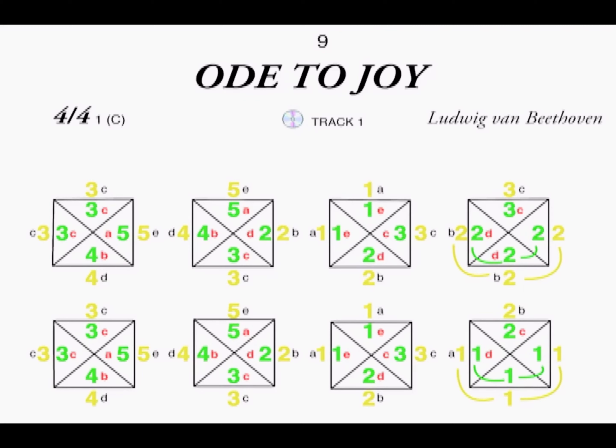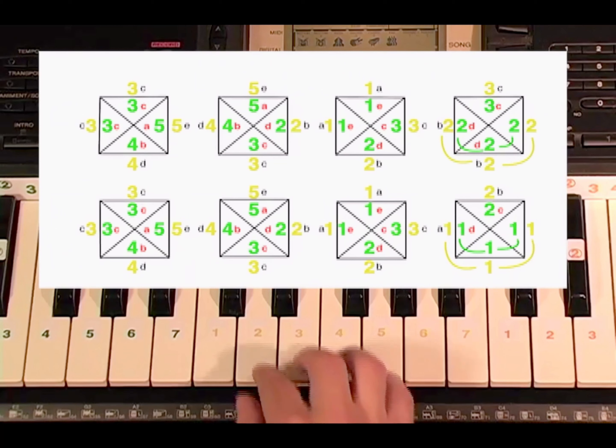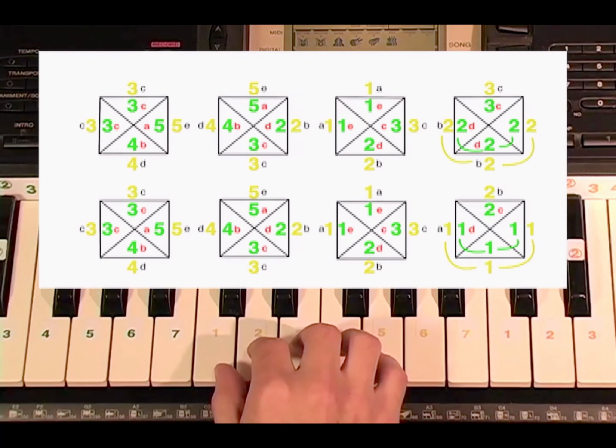Let's try playing eight measures of the song Ode to Joy. First, practice playing only with your right hand. Then practice with your left hand by itself. Once you feel comfortable playing independently with each hand, try playing with both hands at the same time. Let's try playing the first four measures.